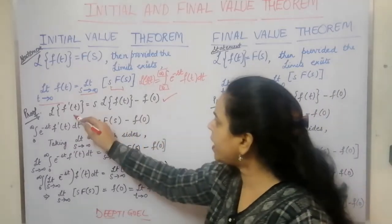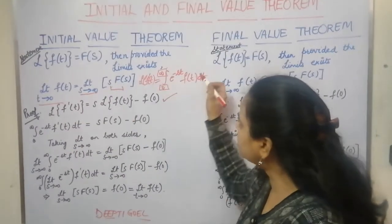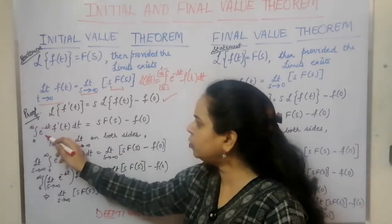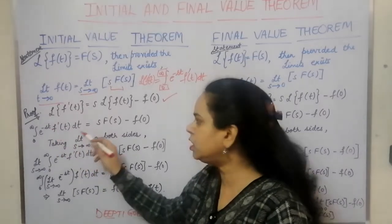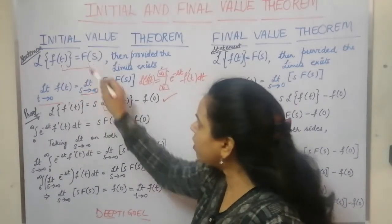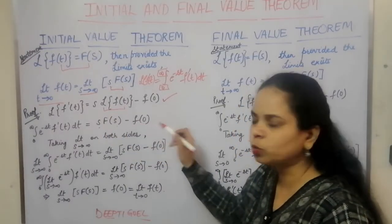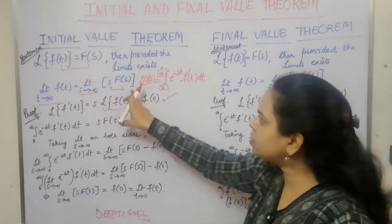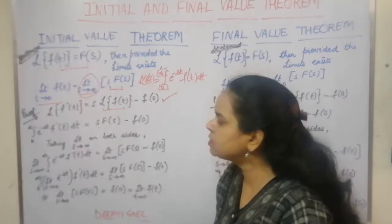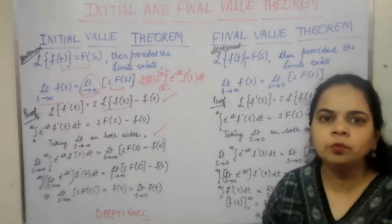We have now applied the definition of the Laplace transform. Instead of f(t), we have replaced it with f'(t), so we write the integral from 0 to infinity of e^(−st)·f'(t) dt, which equals s·F(s). Writing L{f(t)} as F(s), we have s·F(s) − f(0). Now, since the theorem statement associates s·F(s) with the limit s tending to infinity, we take the limit s→∞ on both sides.